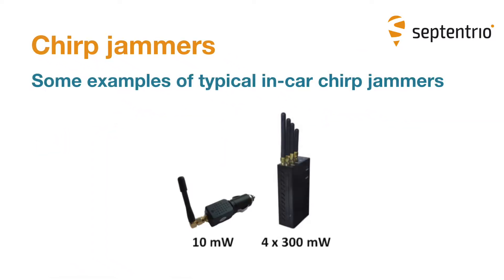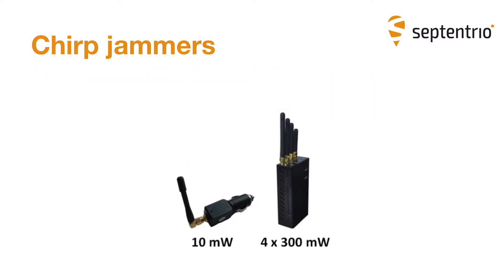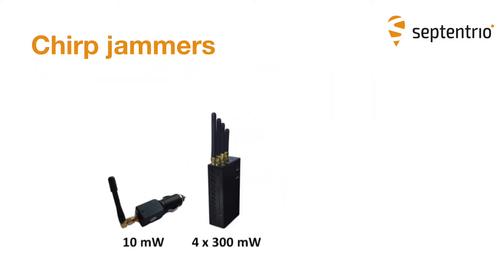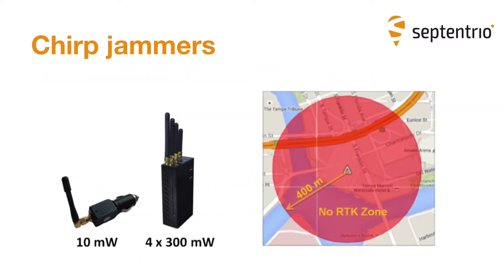I'll use a 10 mW jammer capable of affecting GNSS signals in a radius of 400 meters. The rapid frequency variation, or chirping nature of its signal, makes it much more destructive over far greater distances than other types of jammers.